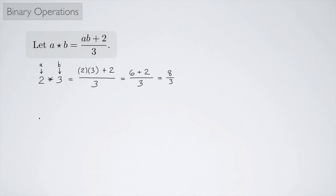We could do this with other real numbers. How about if we tried something with fractions, something that's maybe a little bit more exciting than just plain old integers that we've been working with. How about if we do 1 half and we'll star that with, oh, I don't know, how about 3 fourths? Let's see what this looks like. Now remember the 1 half is playing the role of the a, the 3 fourths is playing the role of the b. So this would be 1 half times 3 fourths plus 2 all over 3.